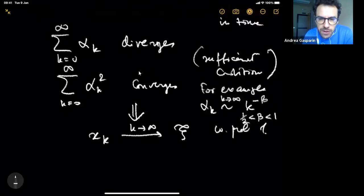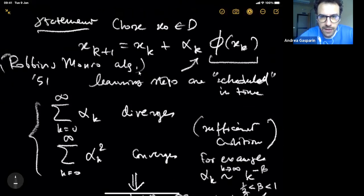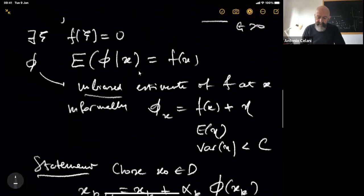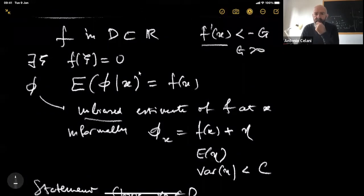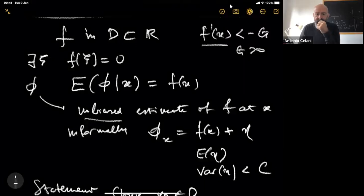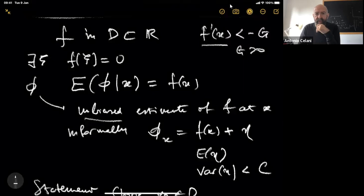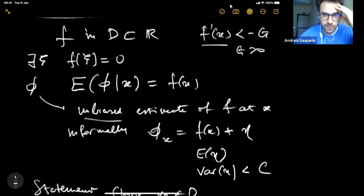A student asks to review the assumptions of the theorem. We need: the actual function must be differentiable with a bounded derivative — f prime of x is strictly bounded below by minus G. For the noise, we just require that phi is an unbiased estimate of f with finite variance. We don't need any particular assumption about the distribution of the noise. The unbiasedness condition can be relaxed — if slightly unbiased or asymptotically unbiased, the calculations work as well.